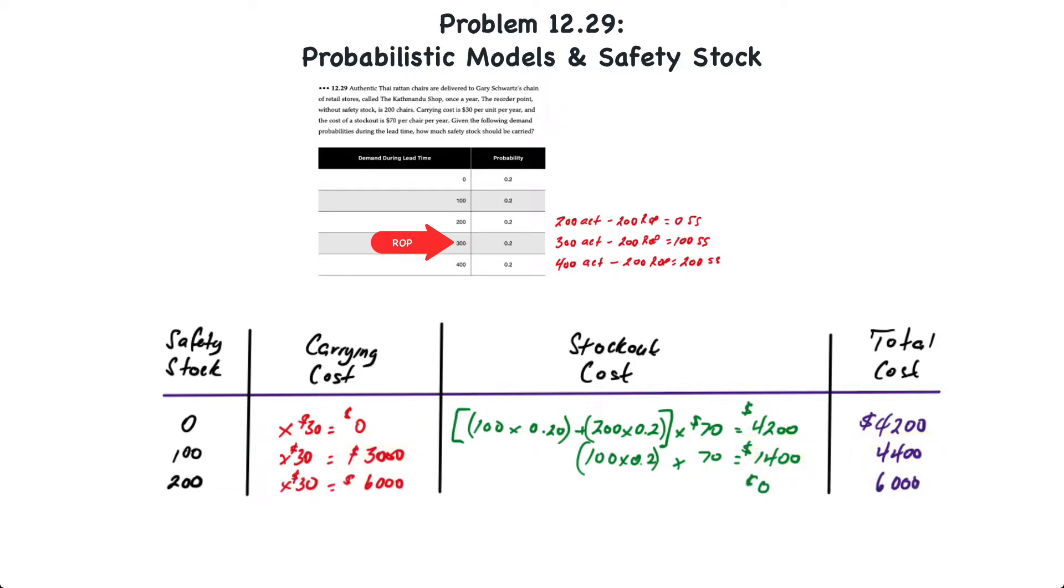Finally if the company decides to hold 200 units of safety stock and demand ends up being only 200 units, it's going to incur a $6,000 carrying cost. 200 units of safety stock times $30. If demand ends up being 400 units however and the company had 200 units of safety stock to cover, then there would be no stockout cost. Therefore the total cost is equal to $6,000 which is based on the carrying cost only.